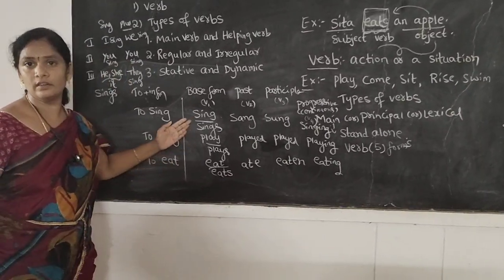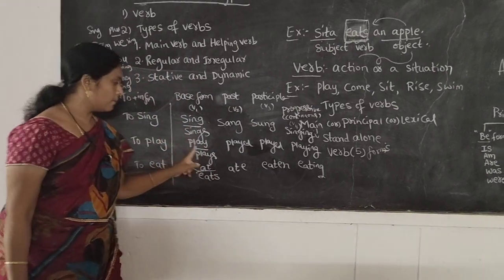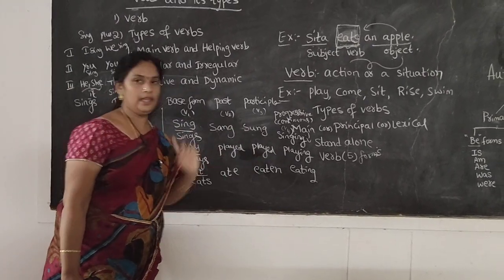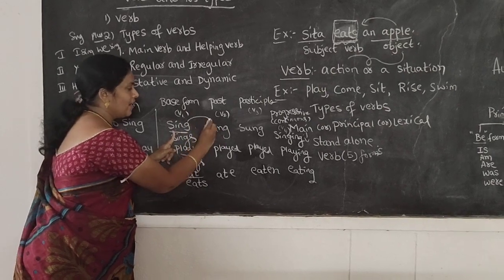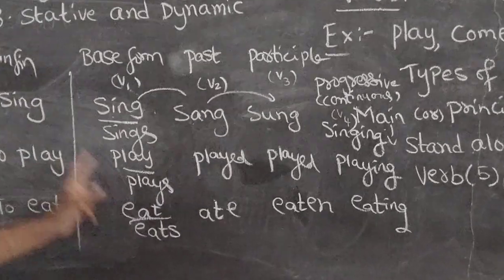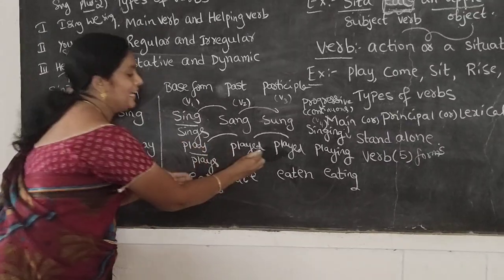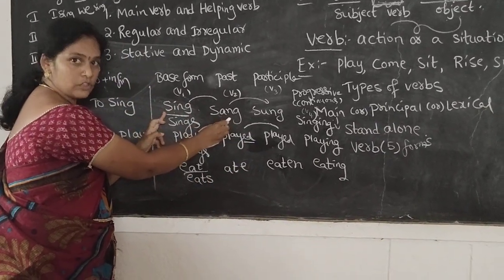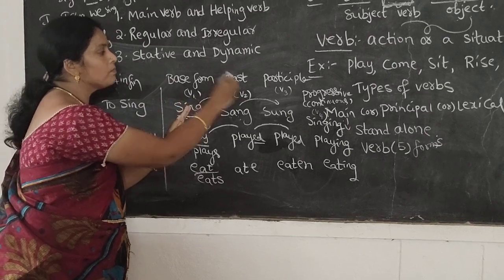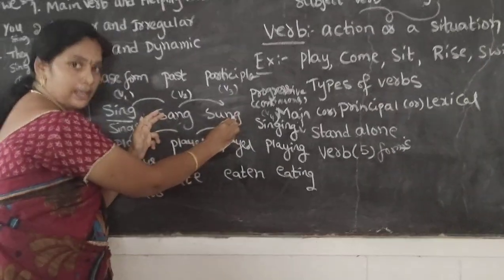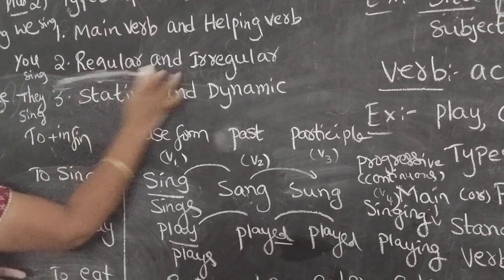Did you observe anything from this? In 'sing': sing, sang, sung — the forms are different from each other. While in 'play': played, played, played — we just add D or ED. When the verb is different from the base form to the past tense and the past participle, we call this verb an irregular verb. When the past and participle are formed by adding D or ED, those are called regular verbs.